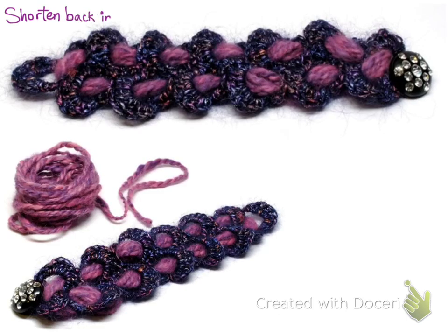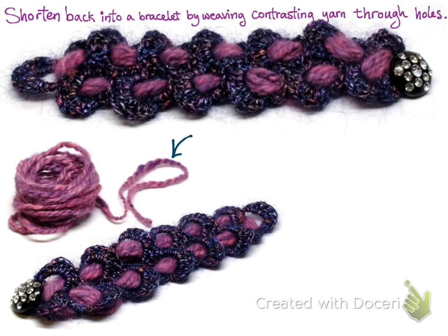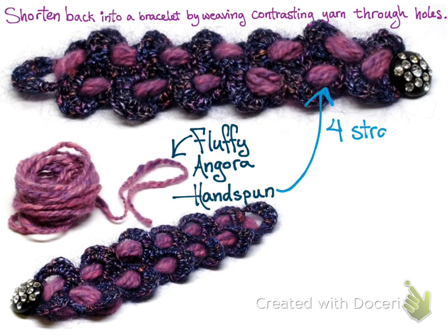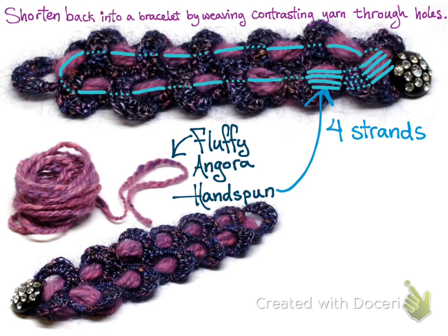And to shorten it back down again into a bracelet, what I did was I wove contrasting yarn through the holes. And so this was a fluffy angora hand spun. And I used four strands like that and I wove them under and over all the way around. And then I tied a knot and wove the ends in. And it made it really three dimensional and fluffy when I did this. And it was able to shorten it back down into the length of a bracelet.